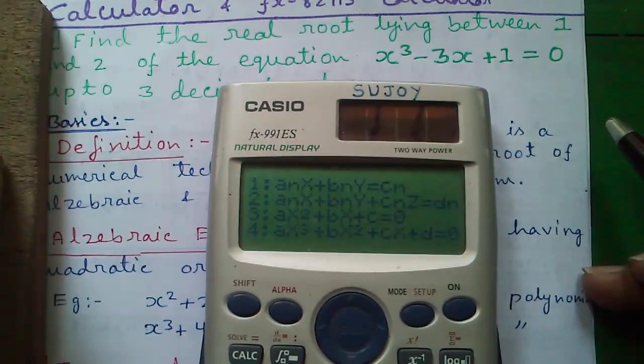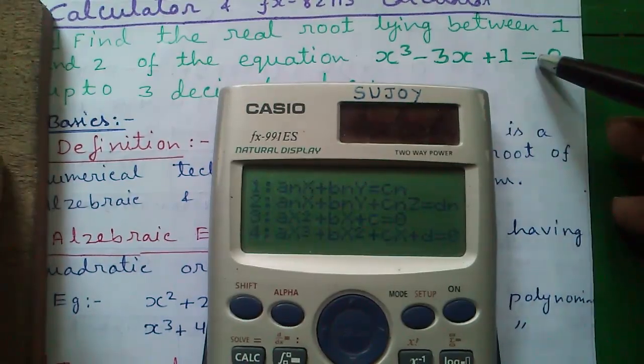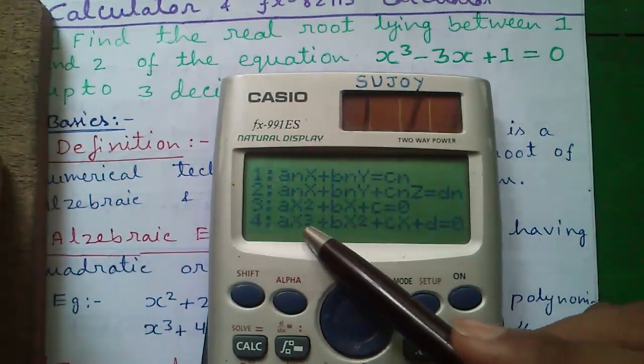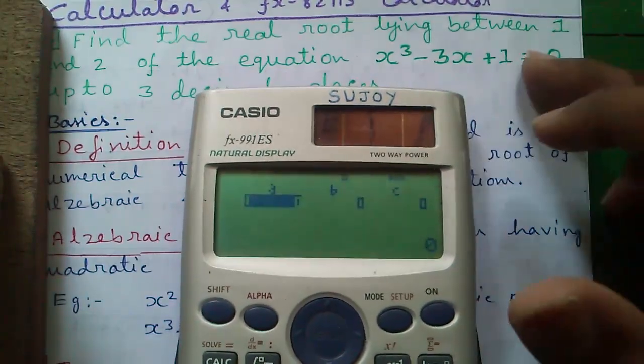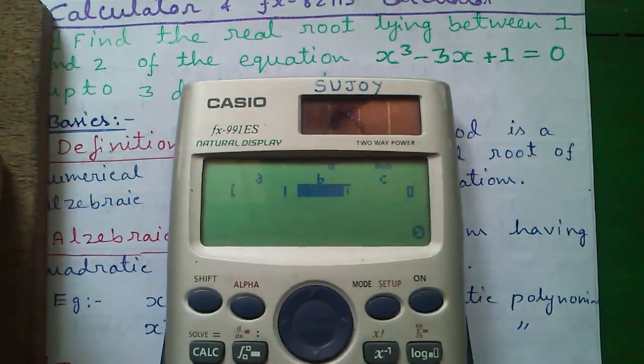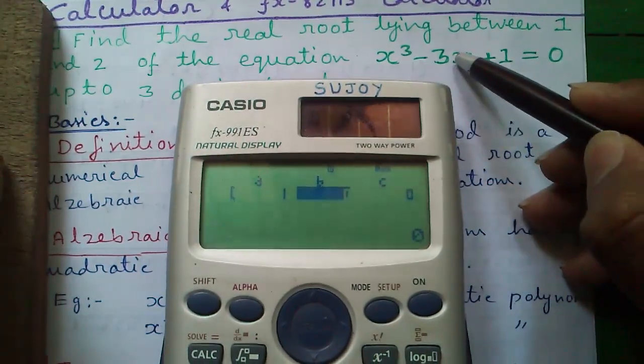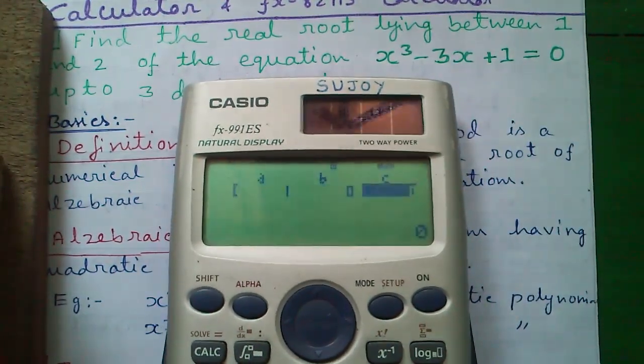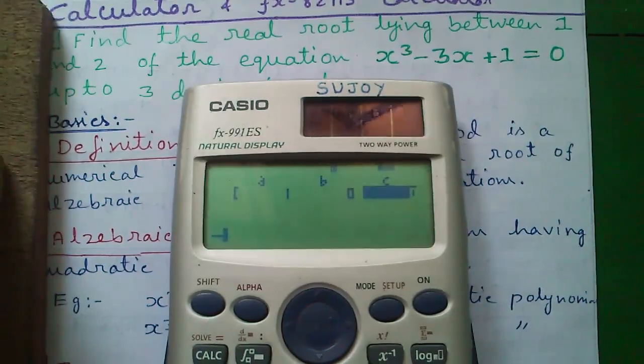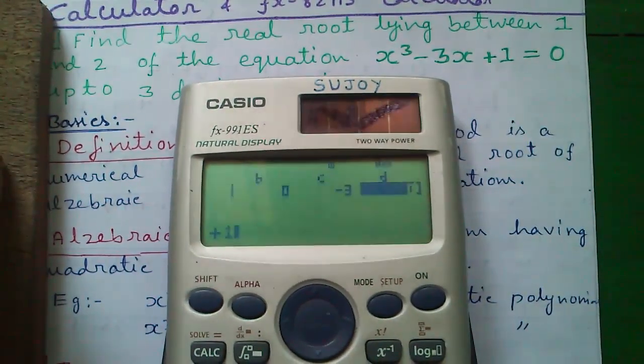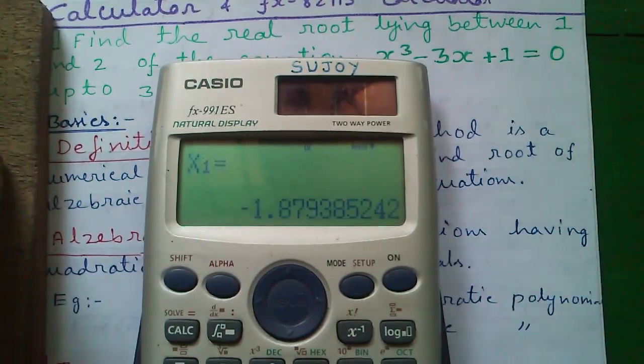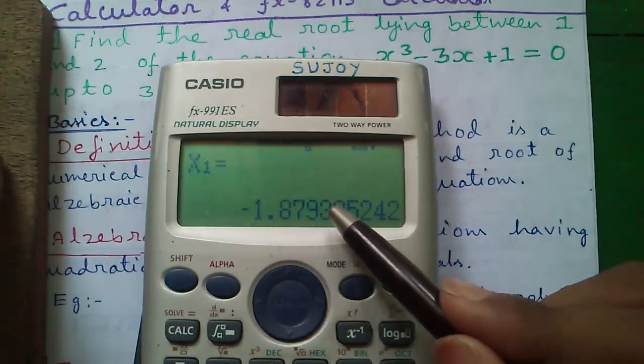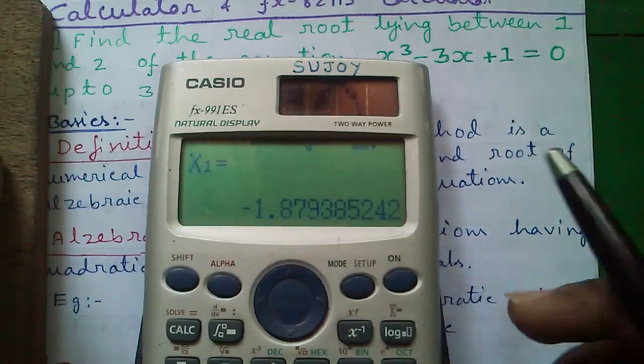Next I will tell you how to solve cubic polynomial equations. For that, press 4 in equation mode and enter the coefficients as previous. So 1x cube minus 0x square, so enter 0 for that, minus 3x plus 1 and enter equals to.